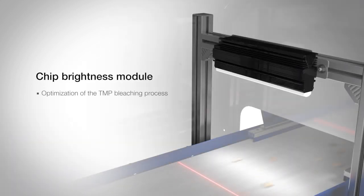Measuring the chip brightness is mostly important for the thermo-mechanical TMP process. Darker chips need more bleaching agents. Knowledge of this will be an important tool for optimization of the TMP bleaching process, improving the mill's profitability.